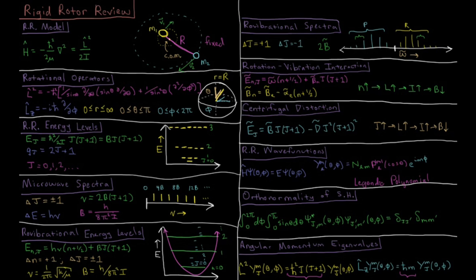This video is a review of the rigid rotor system in quantum mechanics. We start with the rigid rotor model system. We've got two atoms of mass 1 and mass 2 connected by some chemical bond at a distance r, and that r is fixed, thus the rigid in rigid rotor.